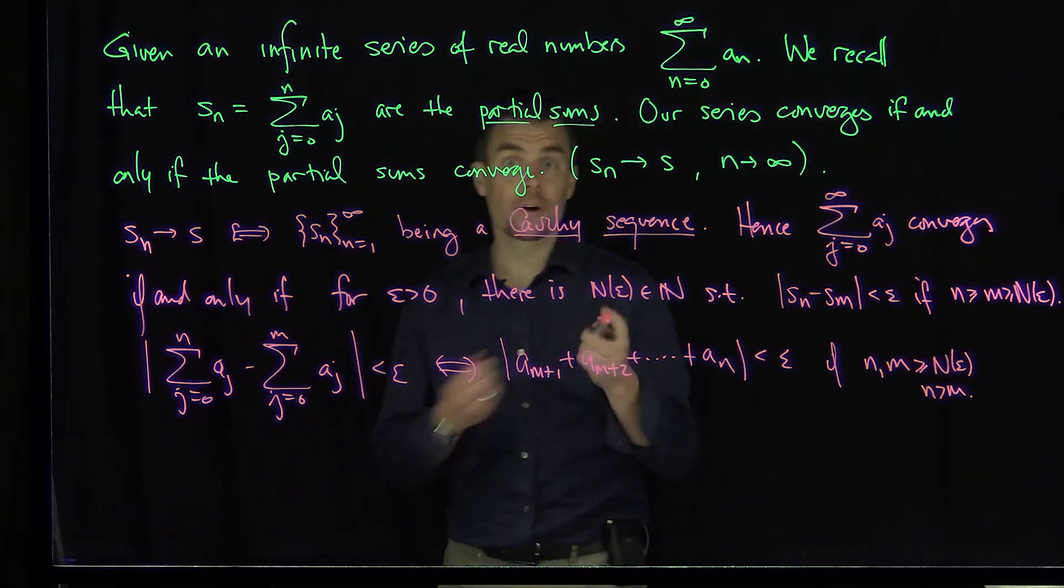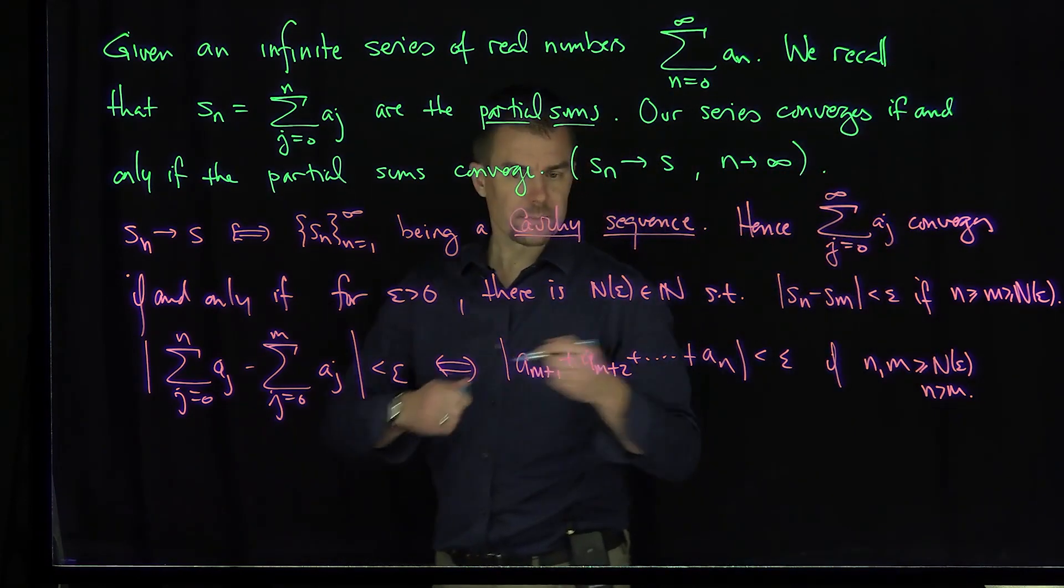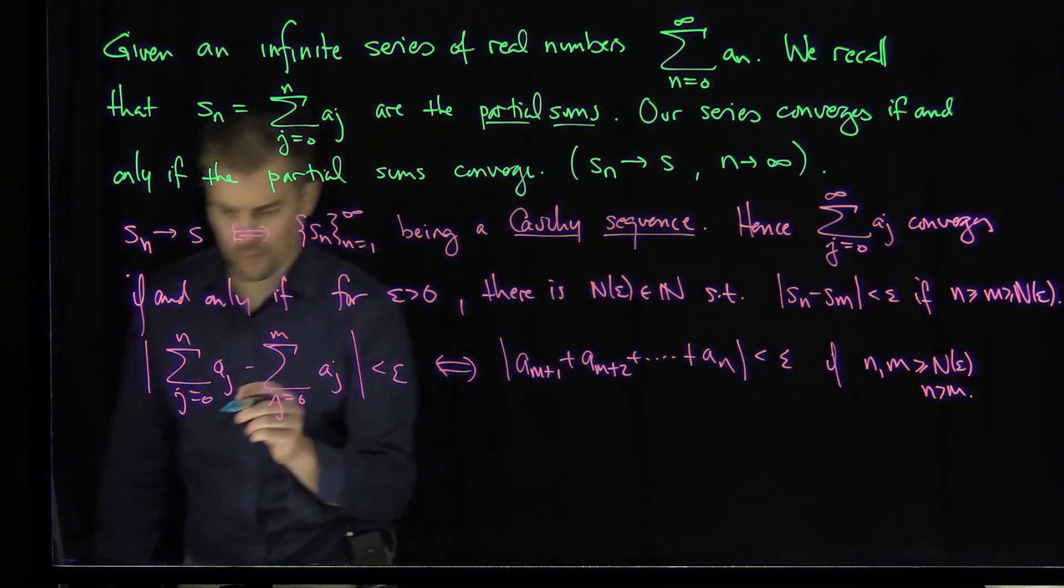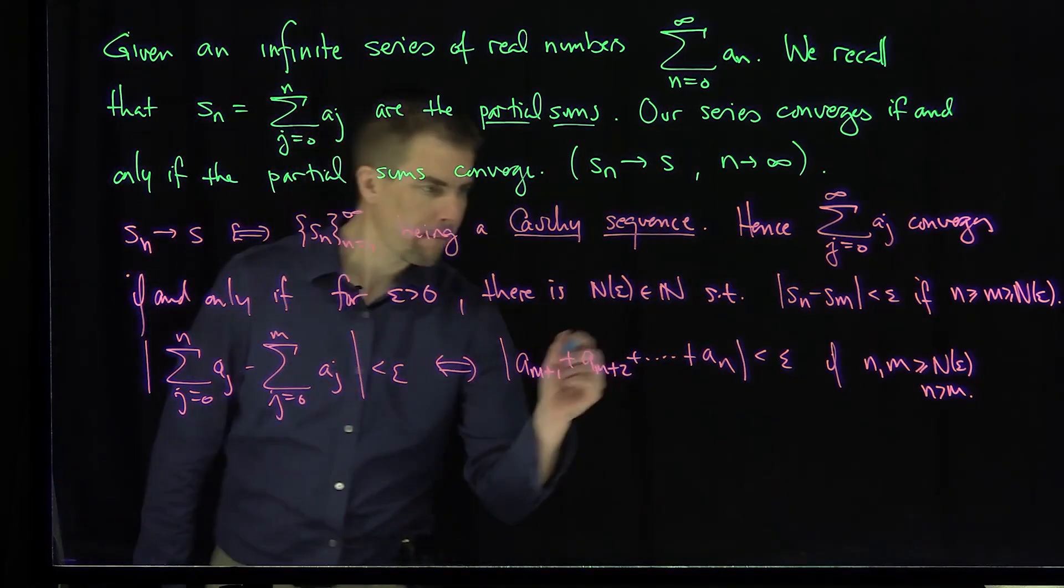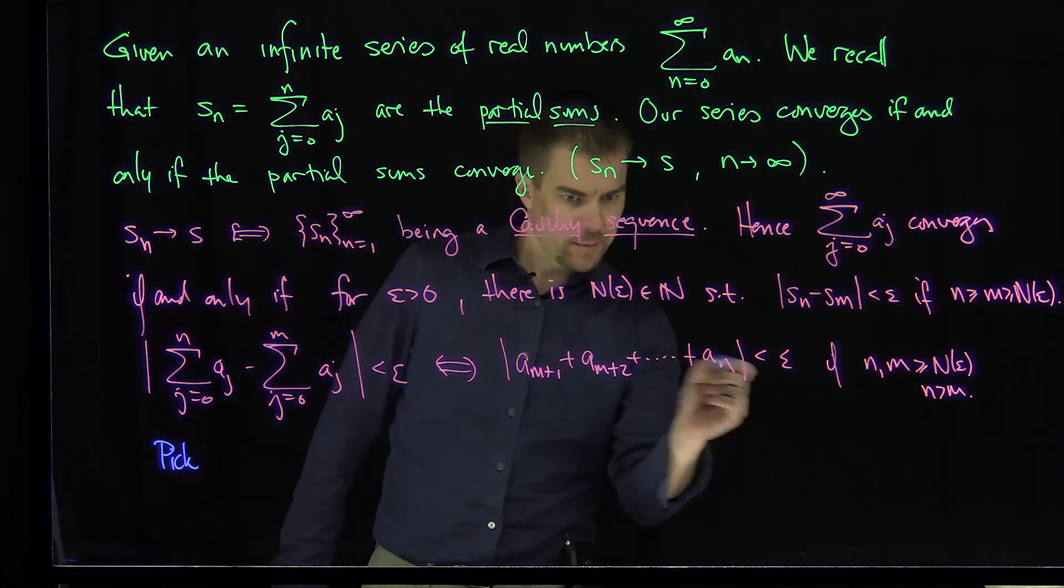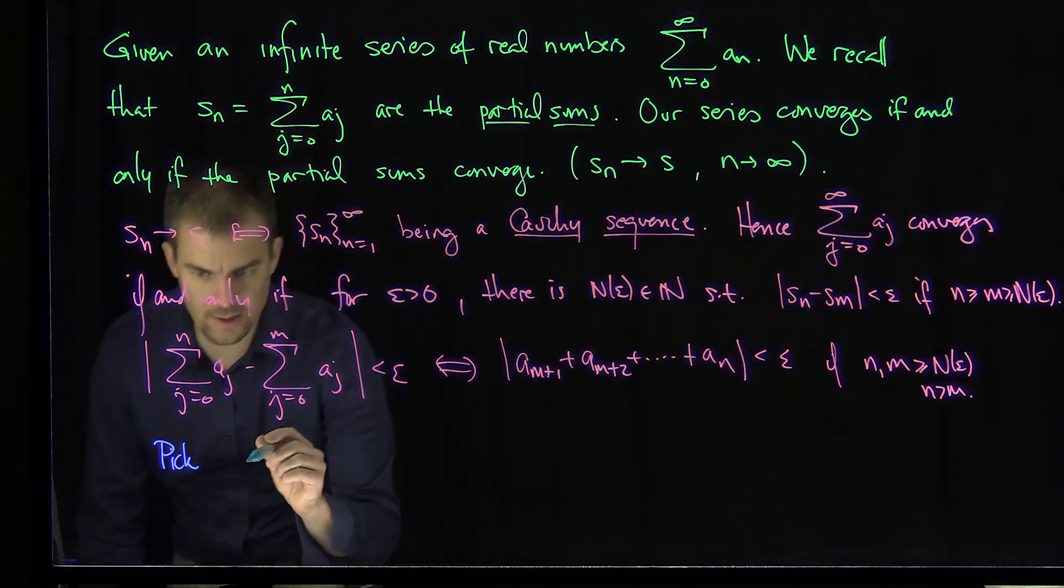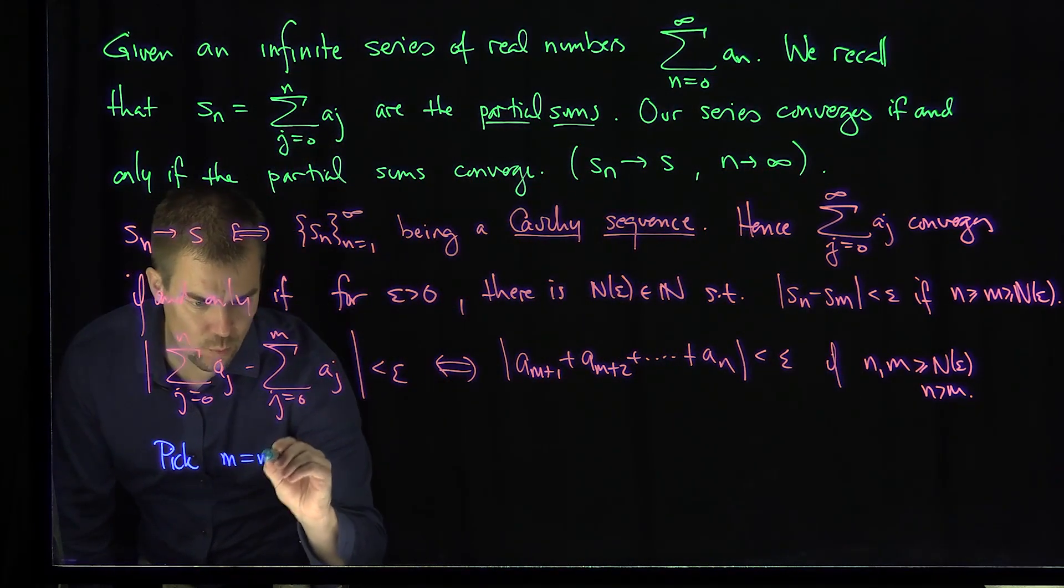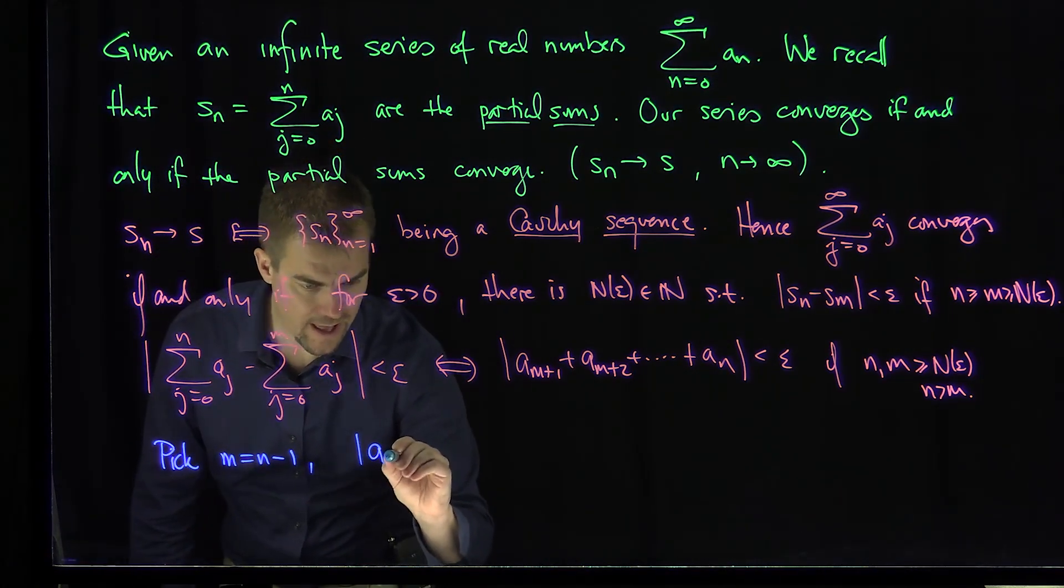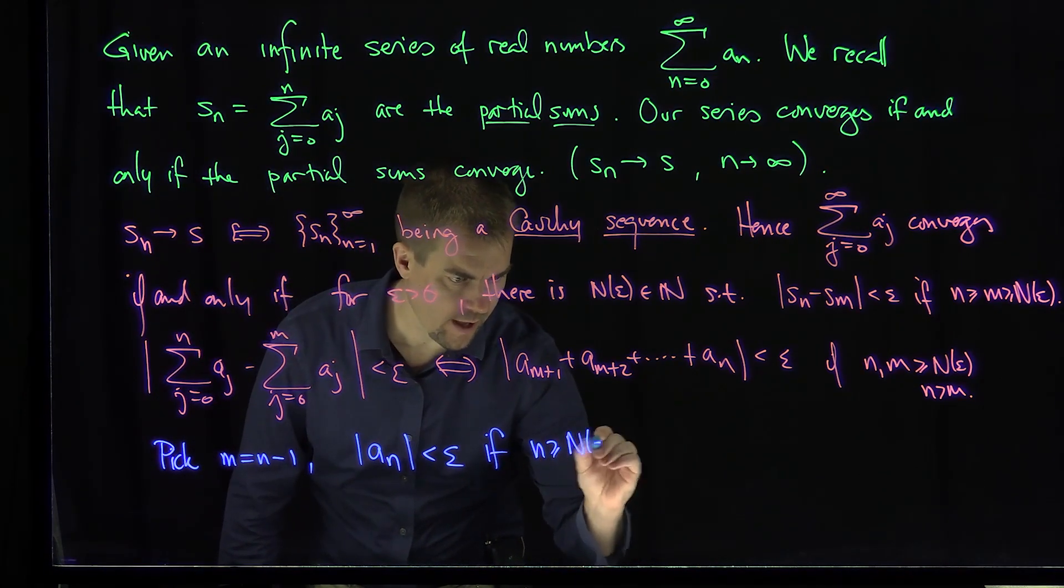Now, in particular, we get one very useful thing which is very common to us when studying Calc 2. If we choose m to be n minus 1, we can choose this to be exactly just one term. So if we pick m to be n minus 1, that's certainly less than n. Then what we conclude from this is that |a_n|, the nth term, is less than epsilon if n is greater than or equal to N_epsilon.